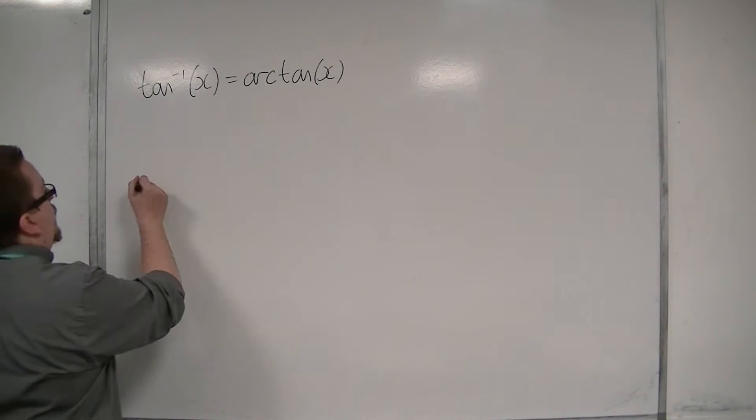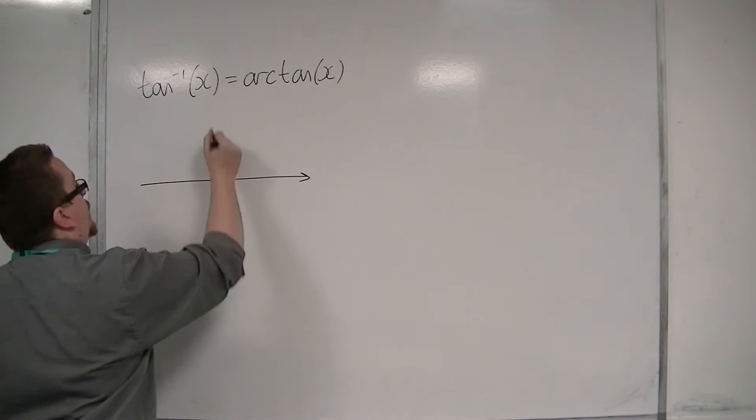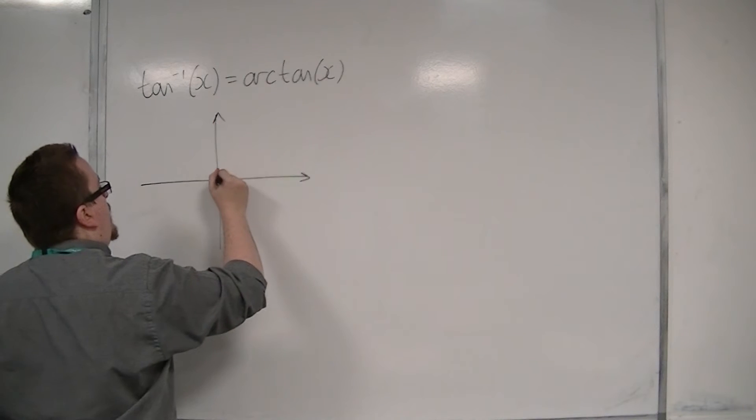So if we look at f of x is equal to tan x first, then tan looks something like this.